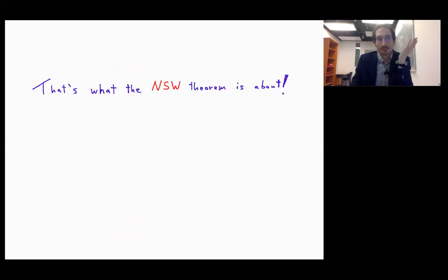So the Niyogi-Smale-Weinberger theorem is exactly the answer to the formal question that we have. So in this theorem we have two ingredients.